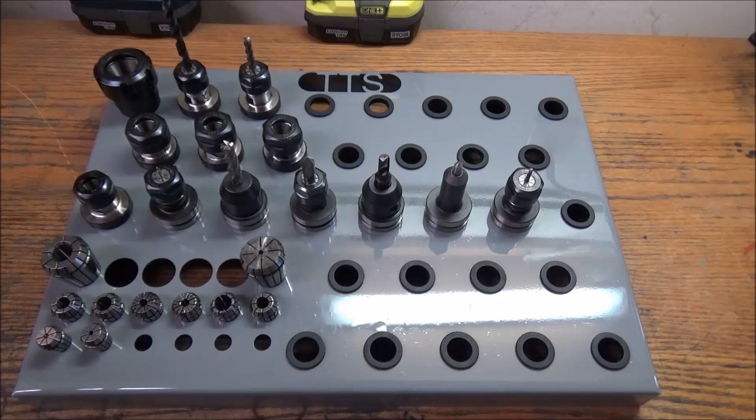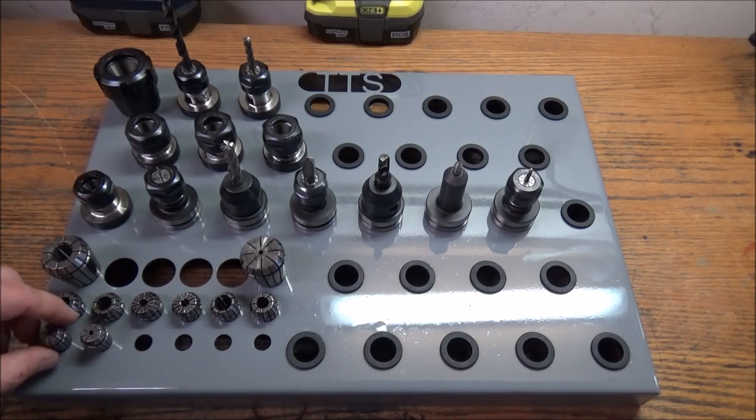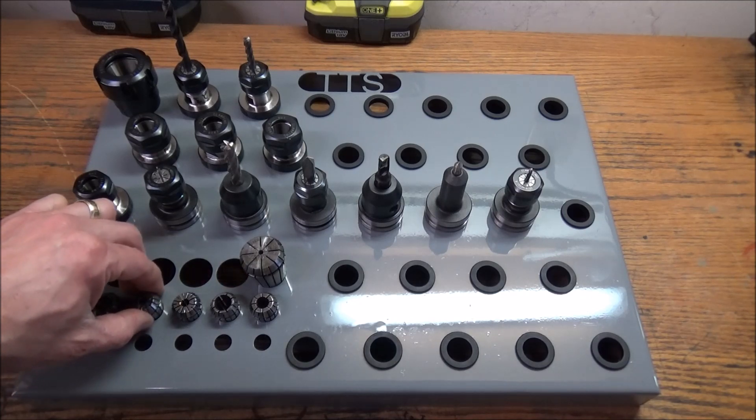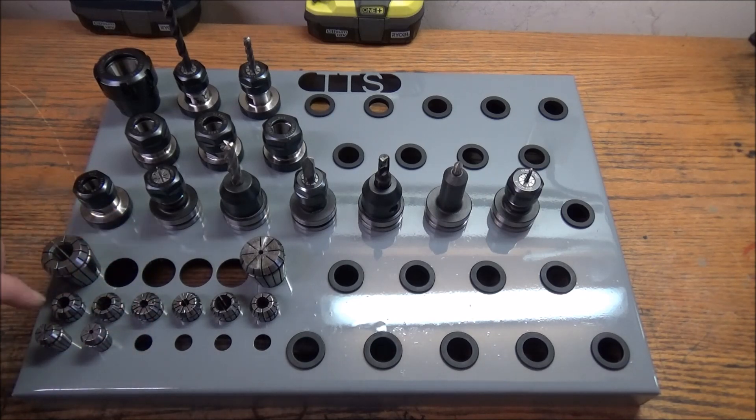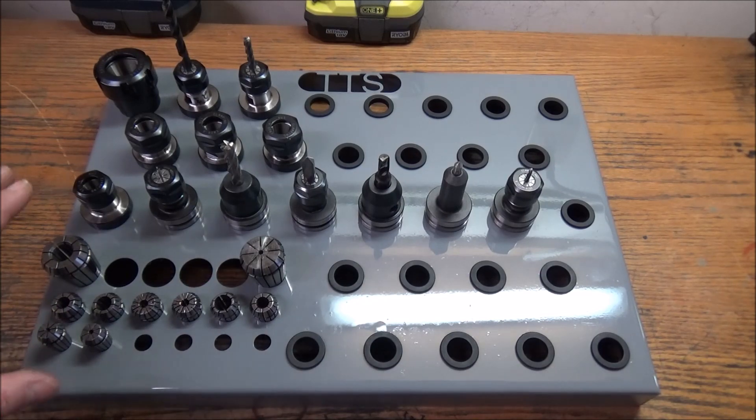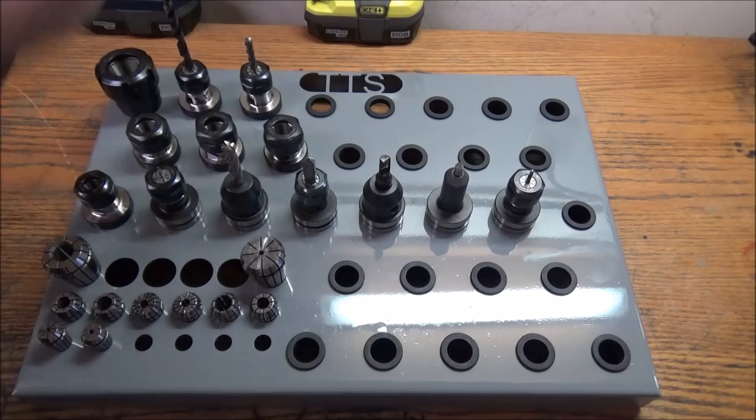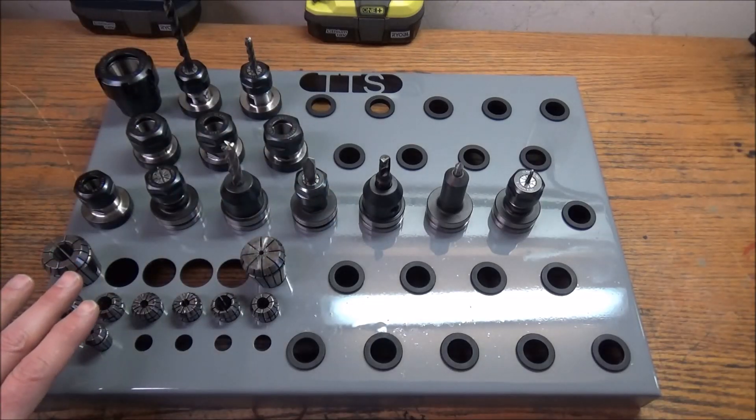This one has spots to put ER collets - 32, 20, and 16. The one that sits at an angle just holds the tool holders.